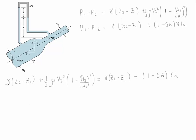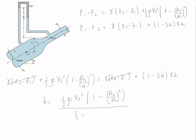Notice that the gamma (Z2 minus Z1) terms cancel each other. We can then solve for H: H is equal to one-half rho V2 squared times (1 minus (A2/A1) squared), divided by (1 minus SG) times gamma of water.